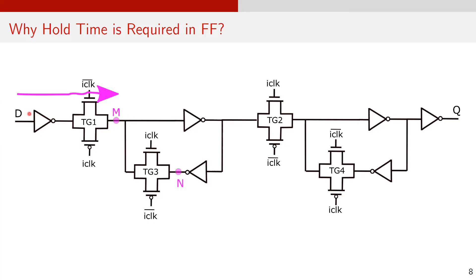If input data D changes while TG1 is turning off, the new data can sneak up to point M or further and create contention with the previously staged data at point N. This would cause metastability in the master latch.